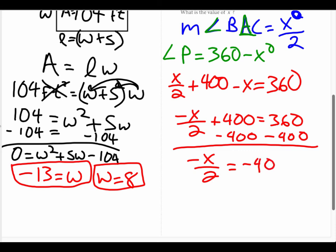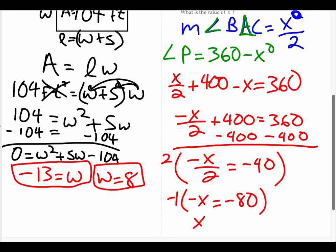Multiplying both sides by 2 gives negative X equals negative 80. Multiplying by negative 1 gives X equals 80.